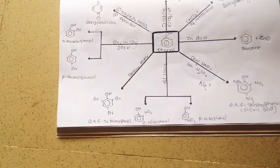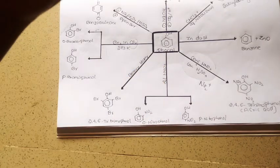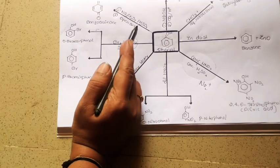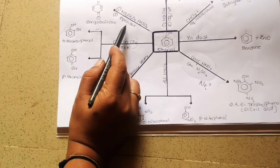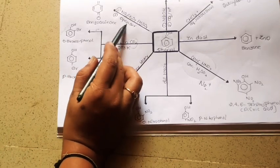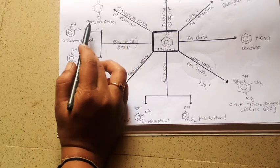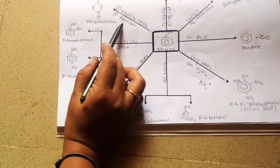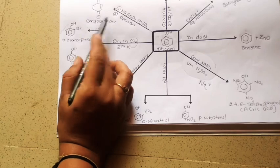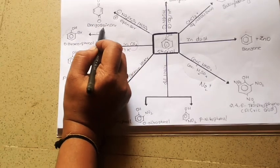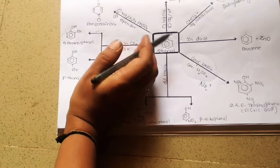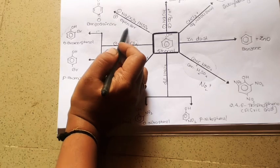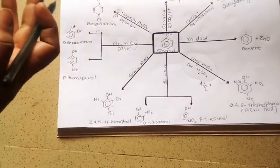Phenol, which is colorless in appearance, when kept in open air and exposed to oxygen, suddenly turns into a pink color. The reason for this is that it undergoes oxidation to give a compound called benzoquinone. So phenol kept open to air turns pink due to the formation of benzoquinone — this is a natural process.